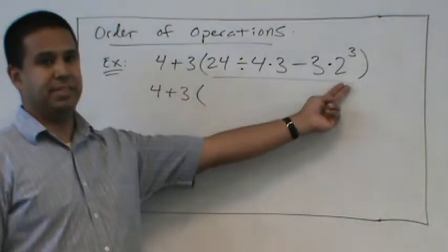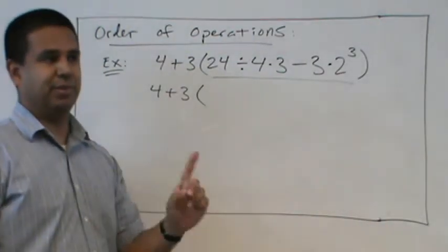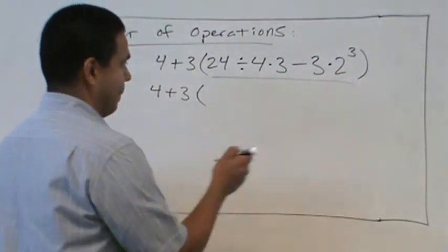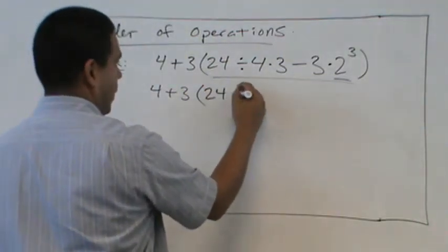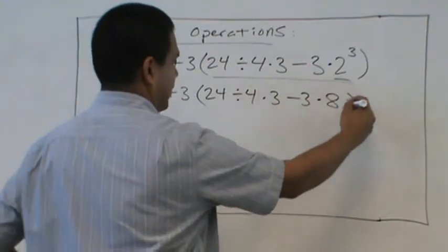Working inside our parentheses. Exponents. Very good. Exponents. We still follow the order of operations. So we have to do this first. Two to the third power equals eight.